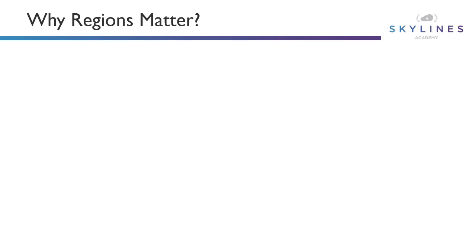So why do regions ultimately matter? For one, redundancy. If you're deploying a workload in a region and that region has a failure for whatever reason, it's helpful to have another copy of that workload running in another region. Or even if you don't need a hot-hot active application, perhaps if the region goes down you want to bring the application back up — not instantaneously — but with data replicated to another region.